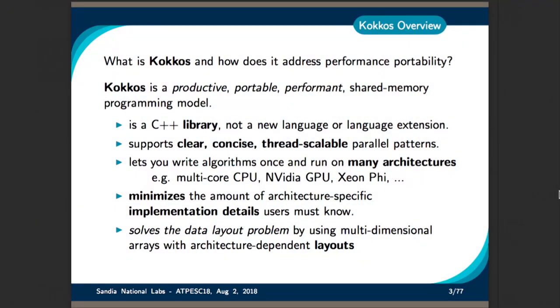Thank you for letting me have a chance to speak about our Kokkos programming model. Kokkos is a portable, performance, shared memory programming model for node-level parallelism. It's a C++ library — not a language extension or a new language. The goal with Kokkos is to let users write their algorithms once and be able to run on many different architectures — this many-core problem — by simply recompiling your code for your target architecture or backend. Kokkos does this by shielding users from needing to know any native programming model details as well as architecture-specific details.